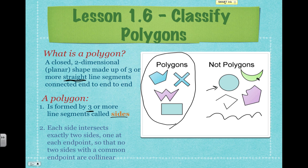Same with this kind of crescent shape — these are curved lines, so anytime you see a curved line, it's not a polygon. And then this particular one does not connect all of the endpoints. This endpoint is not connected with this endpoint here, so because there's a space, it's not a polygon.